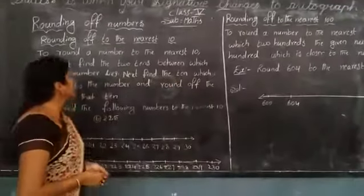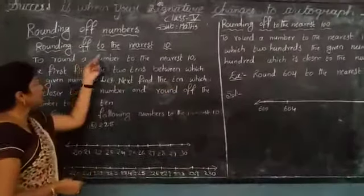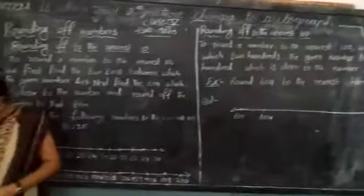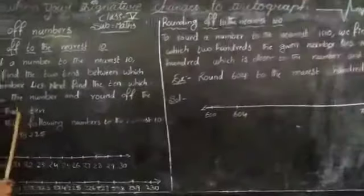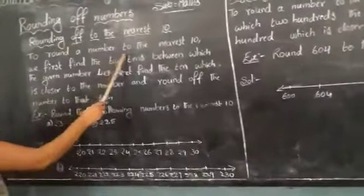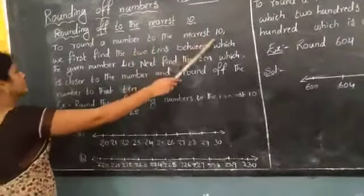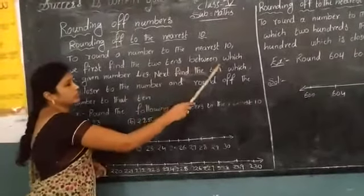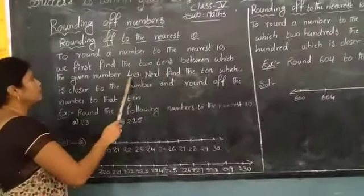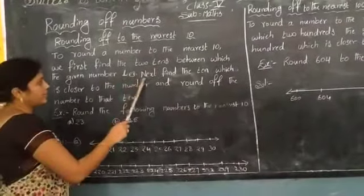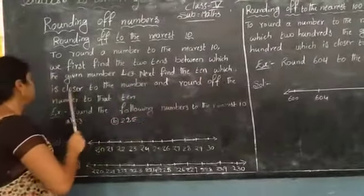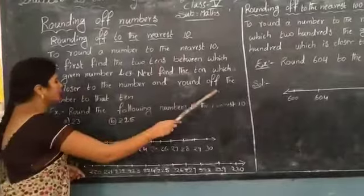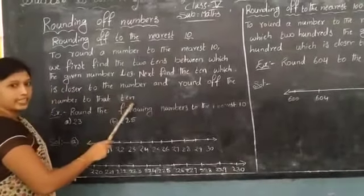Let's learn rounding off to the nearest 10. To round a number to the nearest 10, we first find the two 10s between which the given number lies. Next, find the 10 which is closer to the number, and round off the number to that 10.